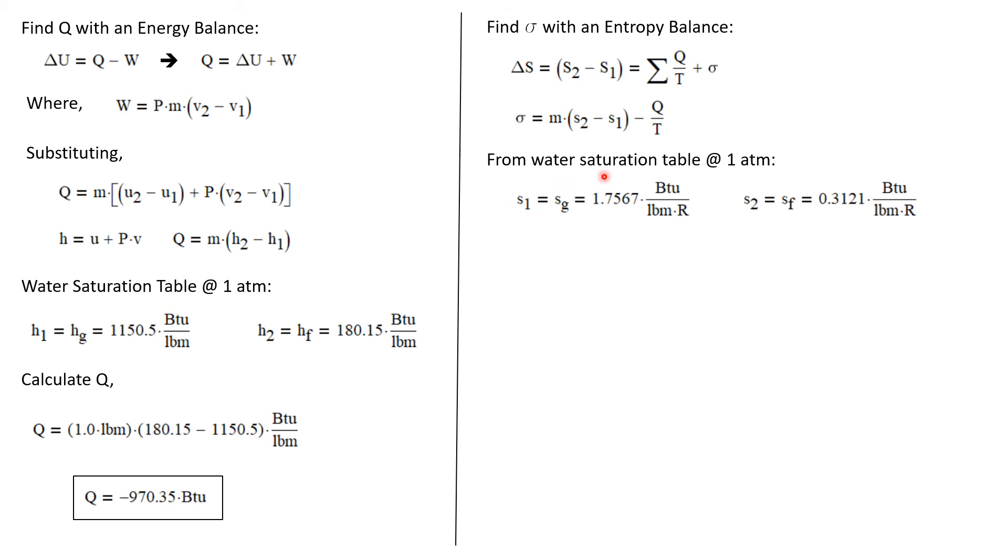We'll go back to the water saturation table at one atmosphere. The entropy at state one is S sub G because it's a saturated vapor. So S1 has a value of 1.7567 BTUs per pound mass R. And at state two, which is a saturated liquid, S2 is equal to S sub F, which is 0.3121 BTUs per pound mass R.